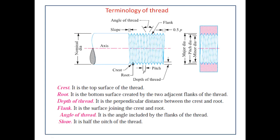For fasteners, different threads are present, and based on the thread the working condition is defined — whether permanent or semi-permanent. The terminology of the thread is represented here. This part is the nominal diameter of the bolt. The thread is present on the bolt, and the right-hand side figure indicates the nut. The major diameter is measured from the outside diameter of the bolt. The pitch diameter and minor diameter — the minor diameter is the minimum diameter, and the pitch diameter is the mean diameter of the circle.